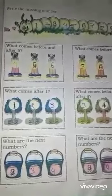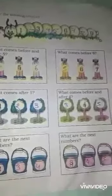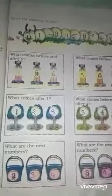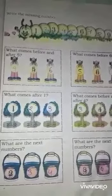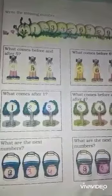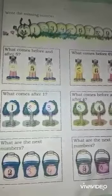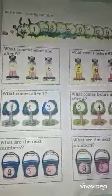What comes before and after 5? So, children, what do you mean by the after number? The number that will come next or forward to any number is known as after number. Similarly, the number which will come backward or preceding to any number is known as before number.